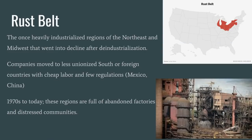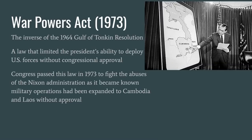The heavily industrialized Northeast and Midwest, once the target of internal and overseas migrants seeking factory work, went into decline after deindustrialization. Many companies moved to the less unionized southern U.S. or to foreign countries with cheap labor and few regulations like Mexico and China. From the 1970s continuing to today, these regions are full of abandoned factories and distressed communities. The War Powers Act was an inverse of the Gulf of Tonkin Resolution — it limited the president's ability to deploy U.S. forces without congressional approval. Congress passed it in 1973 to fight abuses of the Nixon administration, as military operations had expanded to Cambodia and Laos without approval.